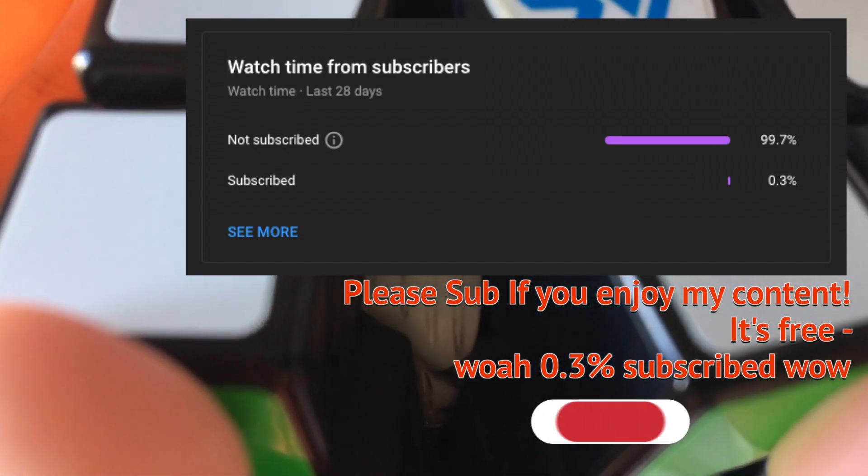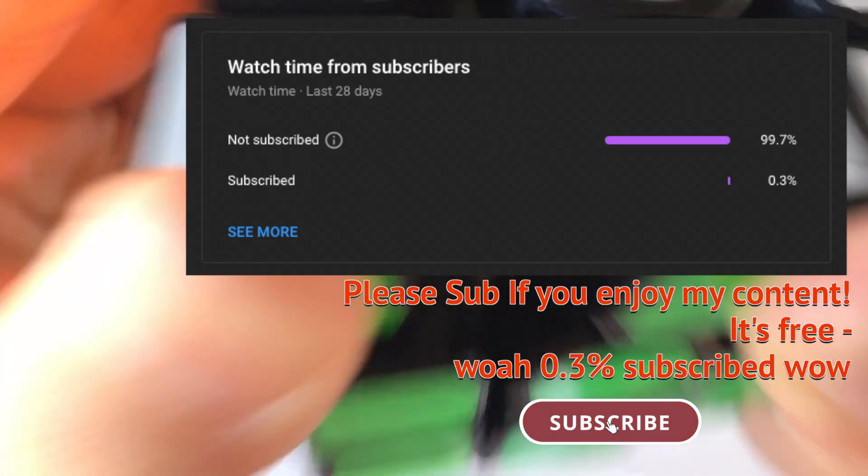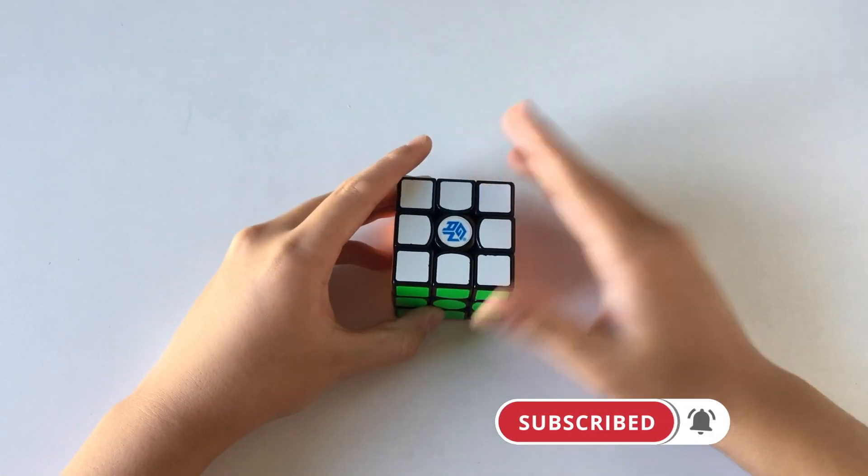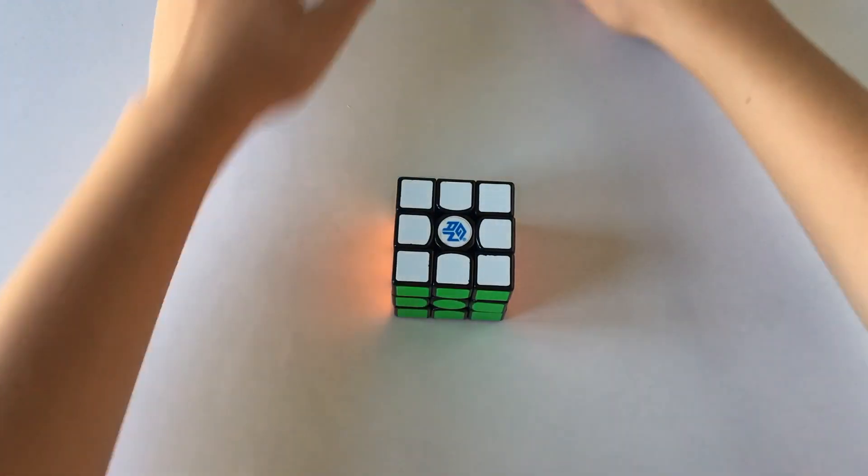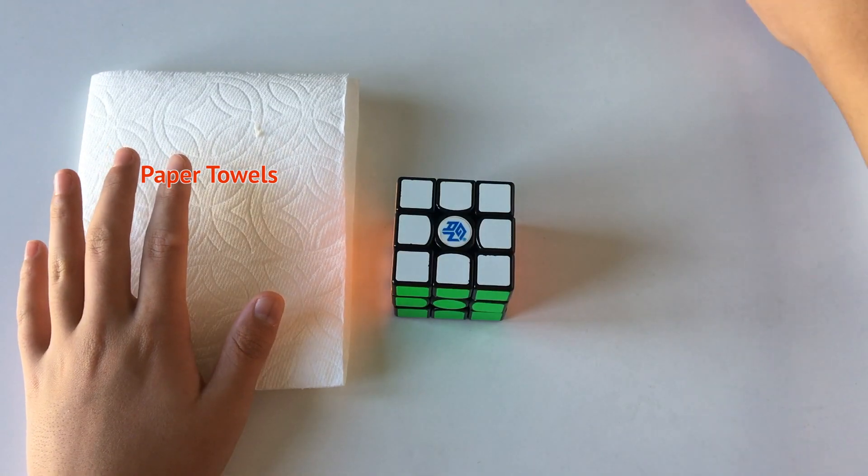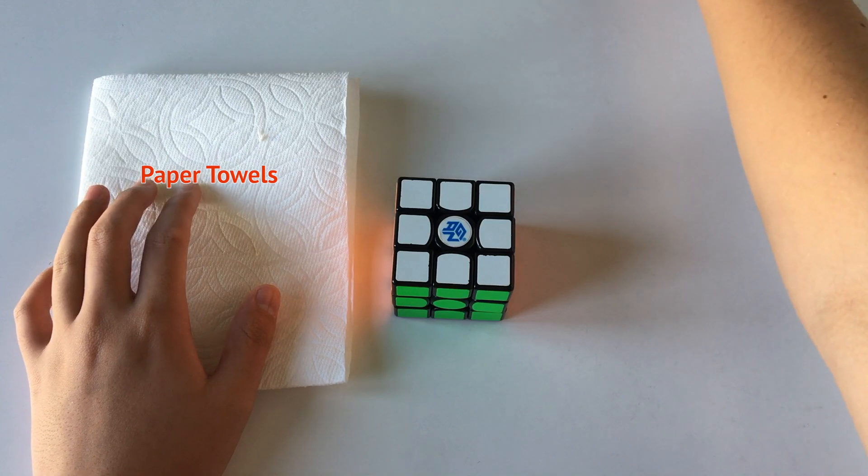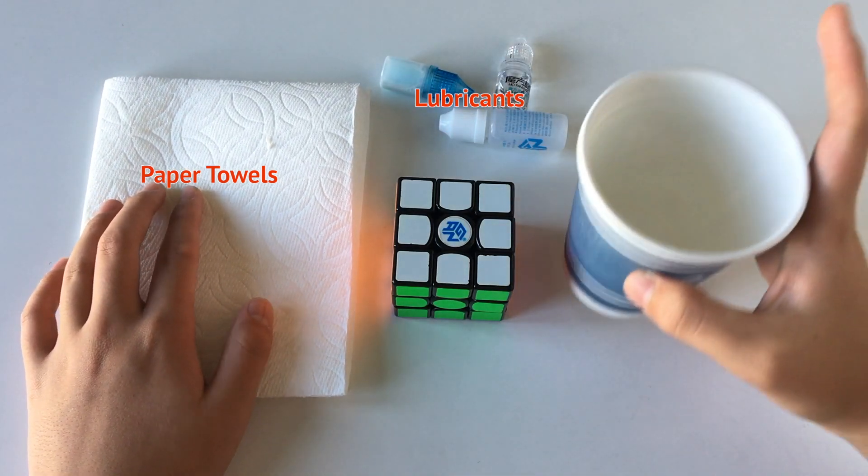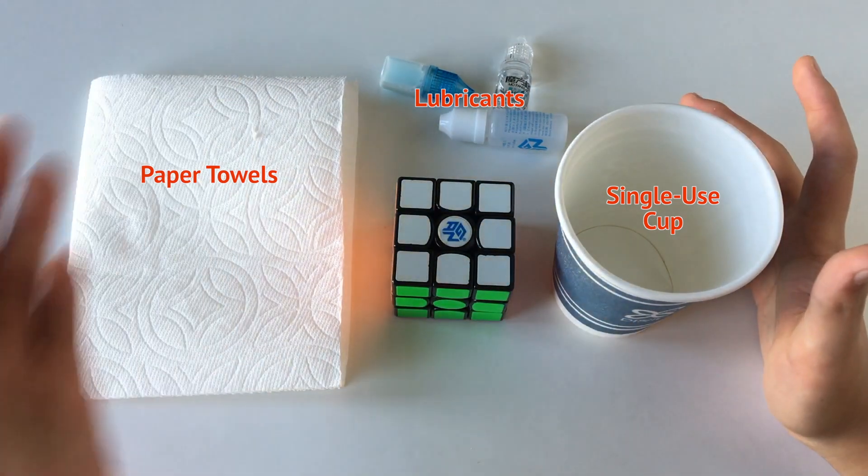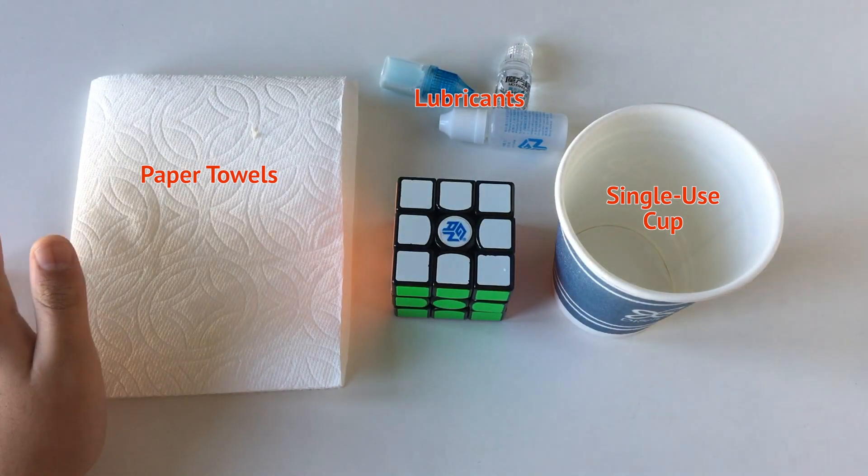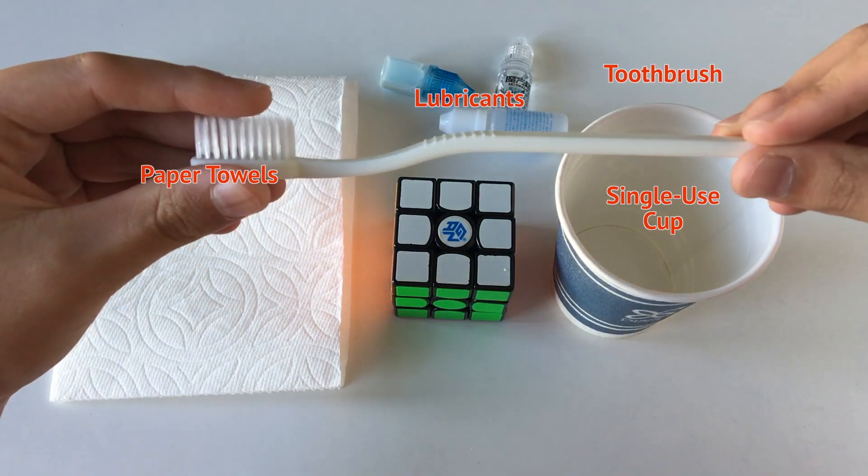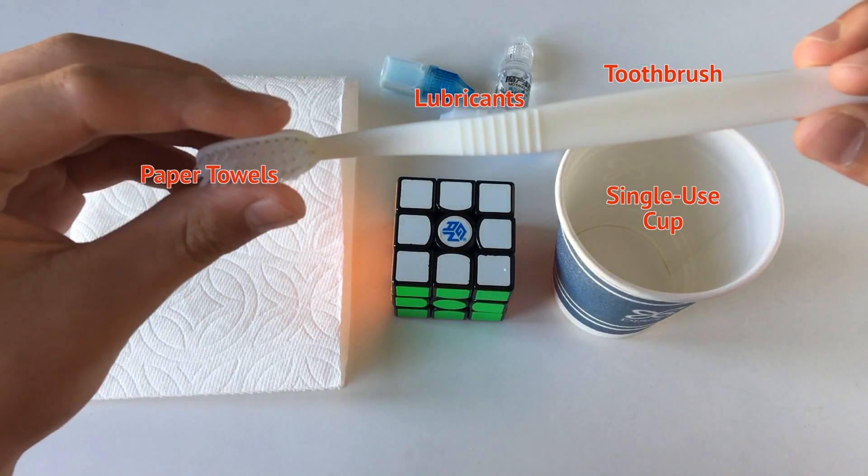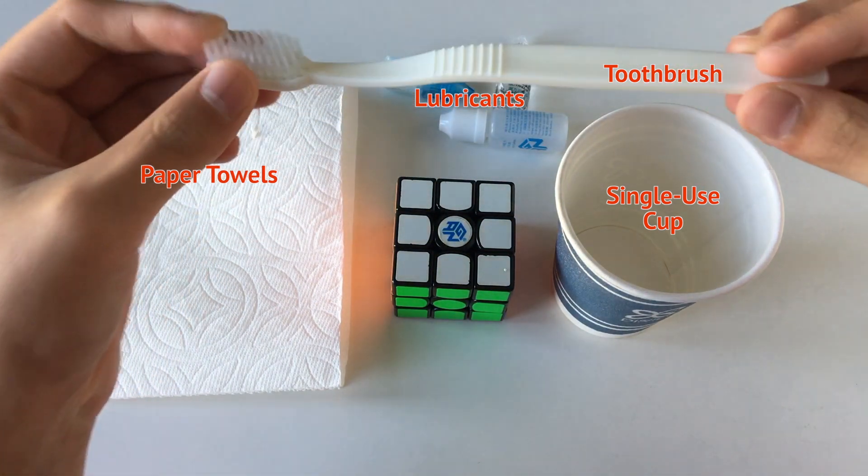Things that you will need: first, some paper towels, and then some lube of your choice, a cup that you will be never using again because there might get lube inside, and a toothbrush.